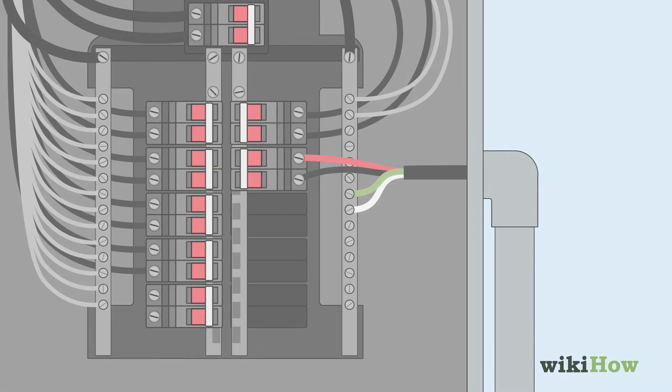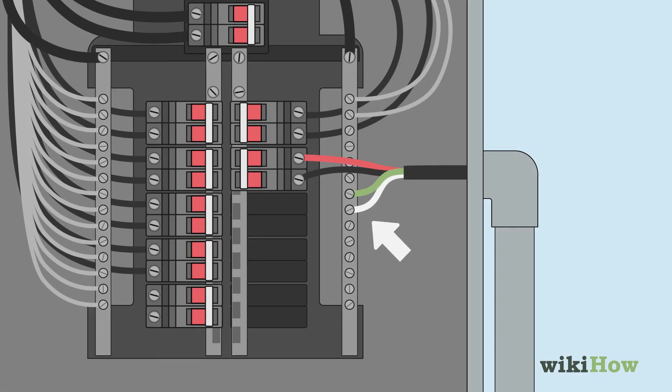Wrap the ends of the white and green wires around separate screws on the grounding bar in your circuit box and secure them in place by tightening the screws.